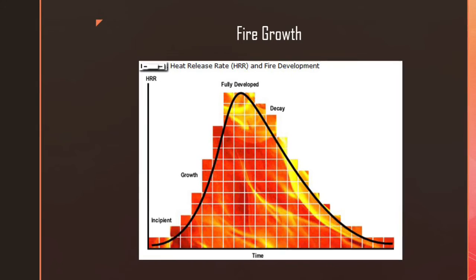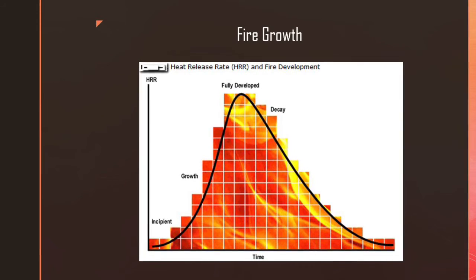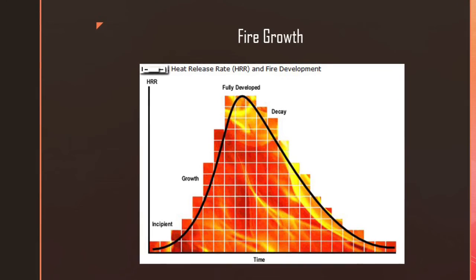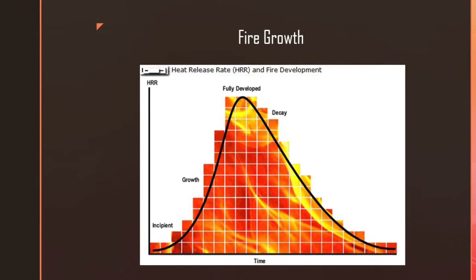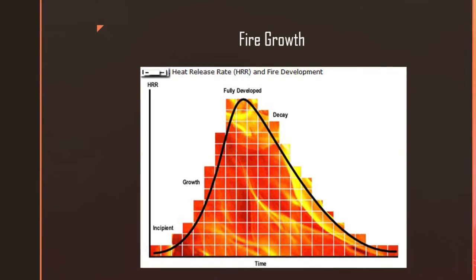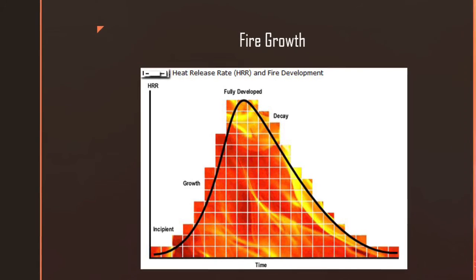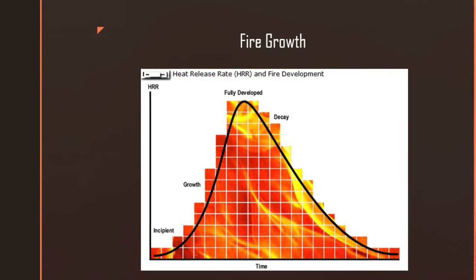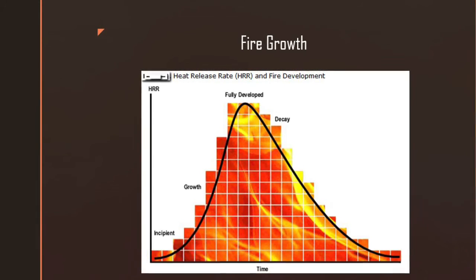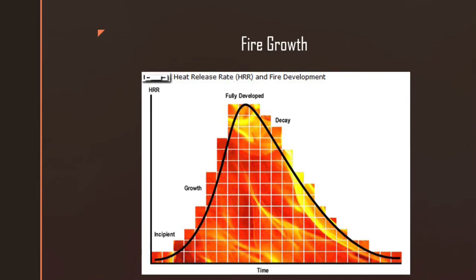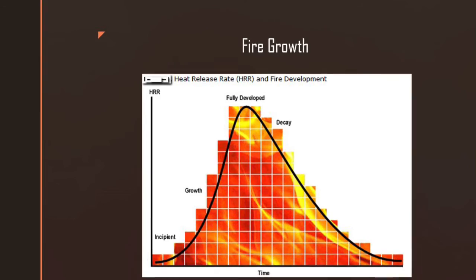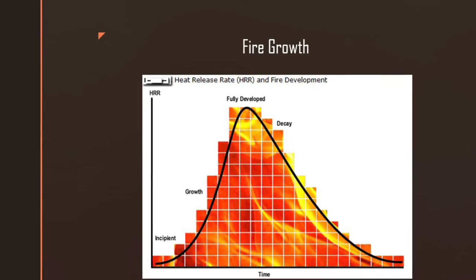This is a graph showing fire growth. It starts with ignition, such as striking a match or a spark, and then moves to the incipient phase — think of something like a trash can on fire. It continues to grow and develops into the fully developed stage, when the whole room or all contents are involved, and then moves into the decay phase. We want to put the fire out with a fire extinguisher when it is in the incipient phase.